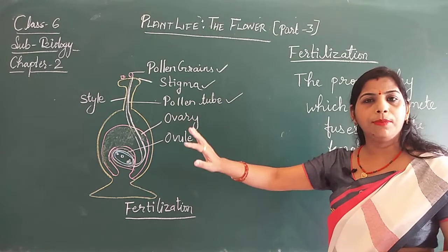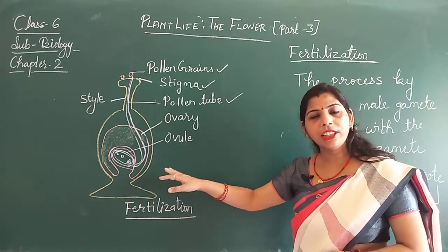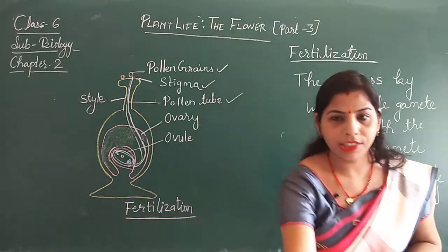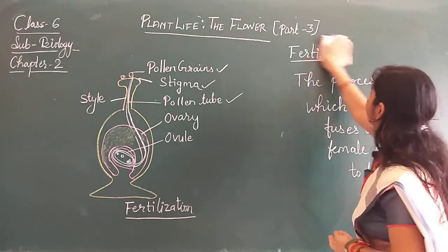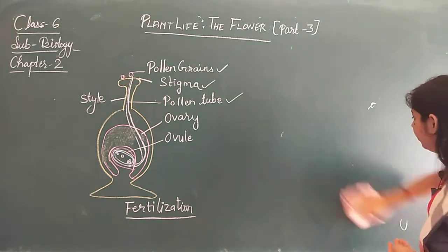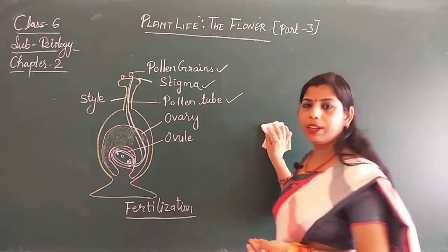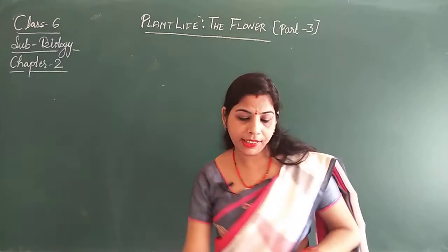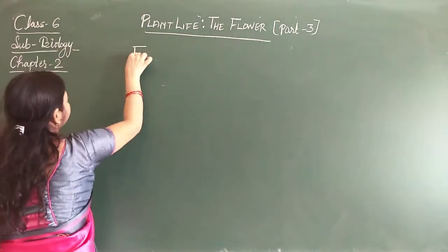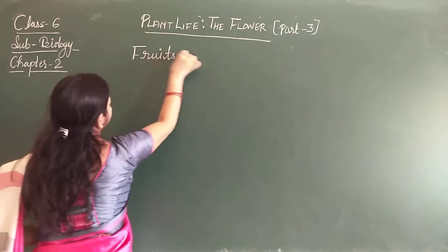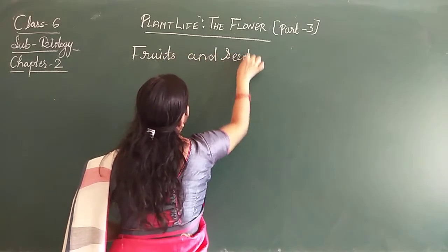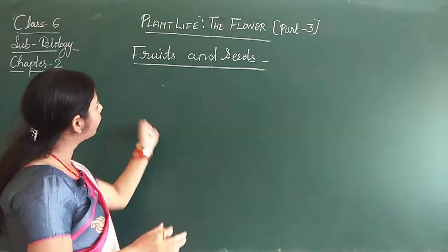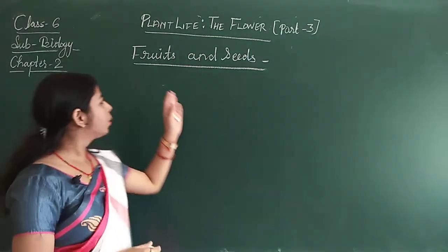That means after pollination, the process of fertilization takes place. And after fertilization, whatever further changes occur, we will now start discussing those. After fertilization, the formation of seeds and fruits begins. These are also known as the post-fertilization changes — whatever changes occur in the flower after fertilization.